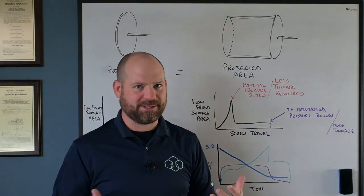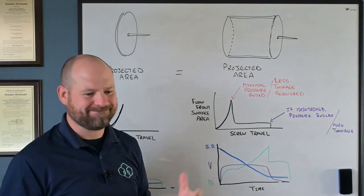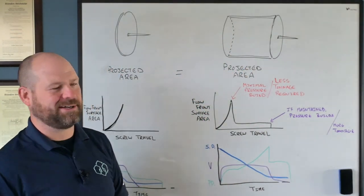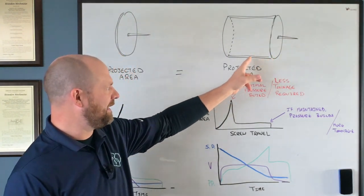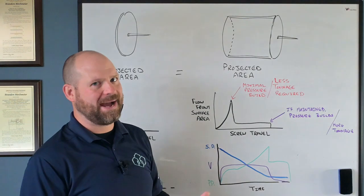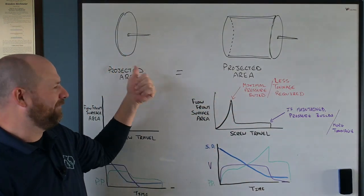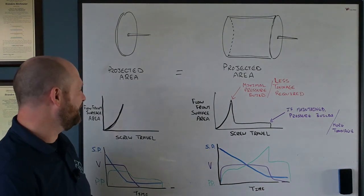If I were to use my projected area calculation, it would say these parts need the same tonnage, but we know that's not true, right? Common sense tells us this flow length that I need to achieve has just as much impact on the tonnage required in this instance versus the Frisbee example.